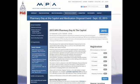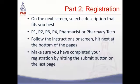Once you've successfully logged in, you now need to select what describes you best. For example, if you're a P1 student, select P1 student, then hit register. The next screen will require you to follow the instructions presented to you. This will mostly require you to hit next at the bottom right of the pages.